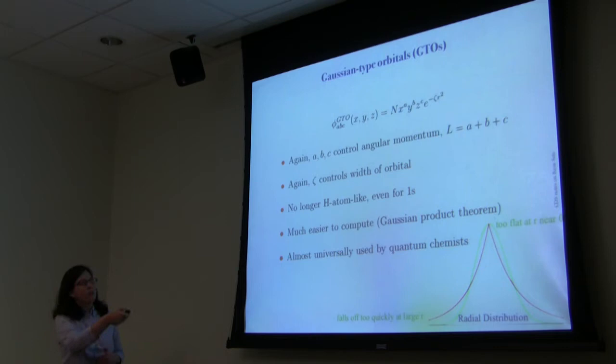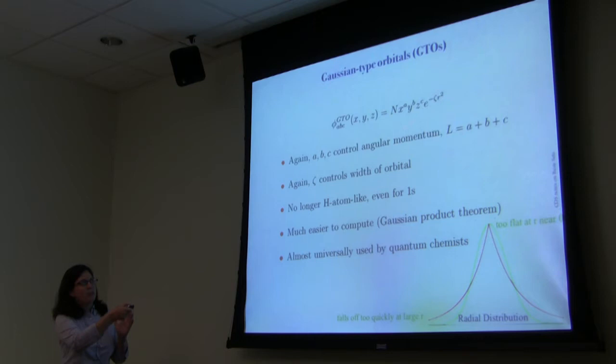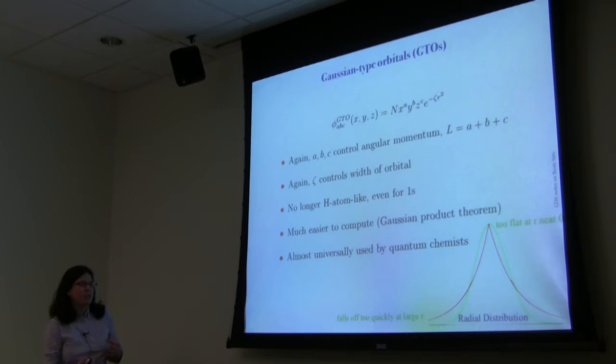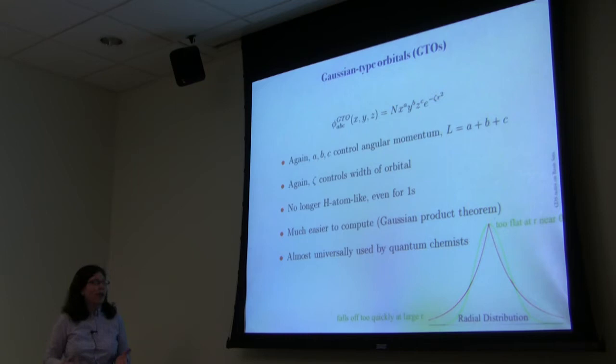Comparing this with a Gaussian-type orbital: same normalization constant, same X^A Y^B Z^C, but now it's e^(−ζr²). Angular momentum is again controlled by A, B, and C, and the width again by zeta. However, comparing the Slater-type with the Gaussian-type, the shape is different — the Gaussian doesn't have the cusp near r=0, and it falls off too quickly at large r. So it's no longer hydrogen-atom-like, even for 1s. Nevertheless, Gaussian-type orbitals are used almost universally by quantum chemists.